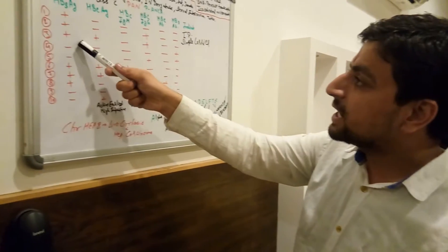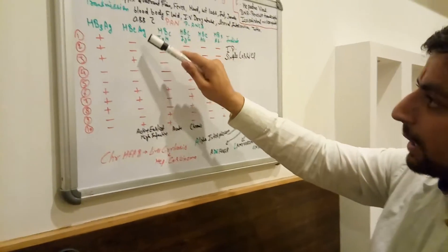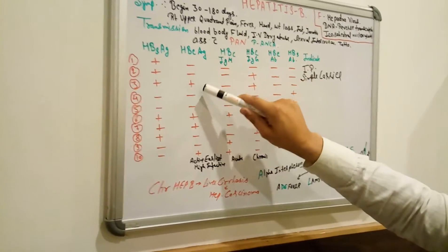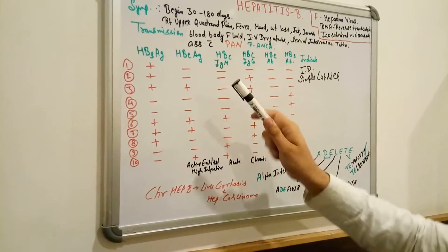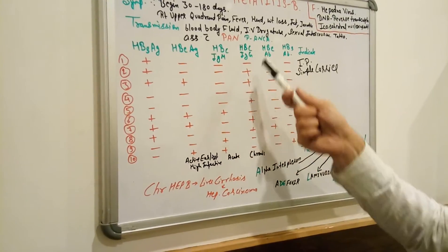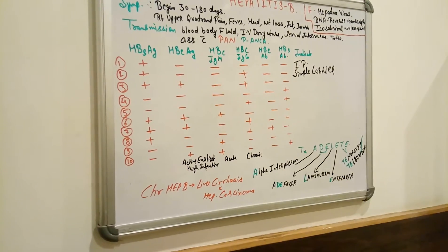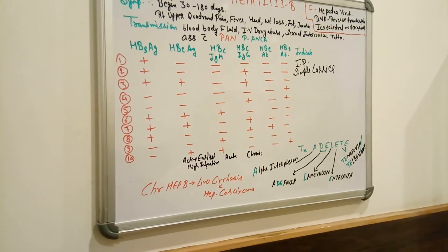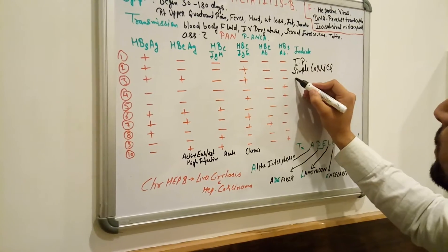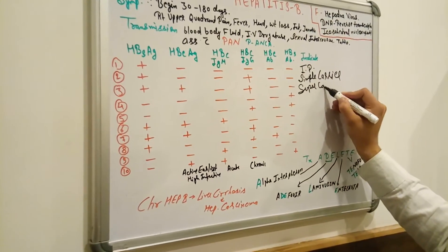Next: if Hepatitis B surface antigen is positive, hepatitis B e-antigen (envelope antigen) is positive, IgM is negative, and Hepatitis B core IgG is positive — then it is a super carrier.